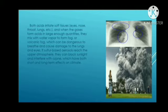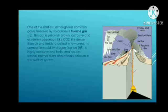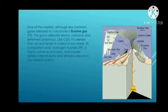Long-term exposure to volcanic fumes or volcanic gas may aggravate existing respiratory problems and cause headaches and fatigue in otherwise healthy people. One of the nastiest, though less common, gases released by volcanoes is fluorine gas. This gas is yellowish-brown, corrosive, and extremely poisonous. Like carbon dioxide, it is denser than air and tends to collect in low areas. Its companion acid, hydrogen fluoride, is highly corrosive and toxic and causes terrible internal burns while attacking calcium in the skeletal system.